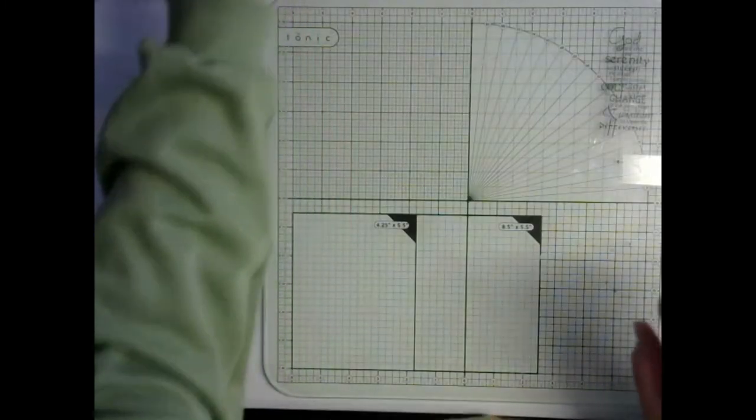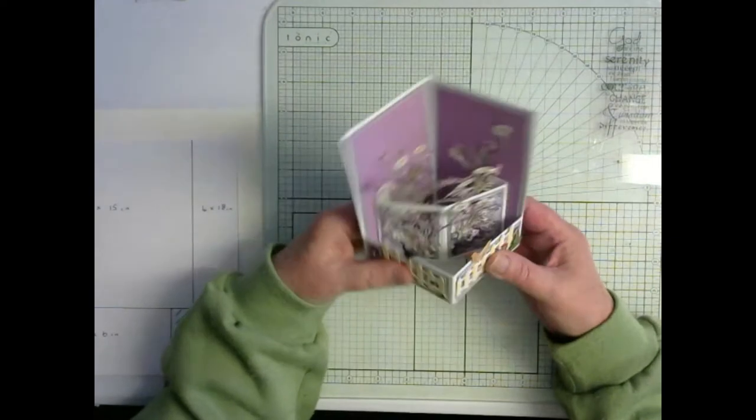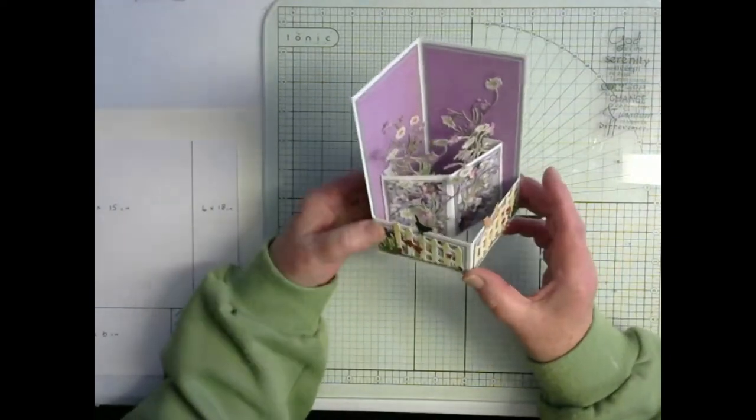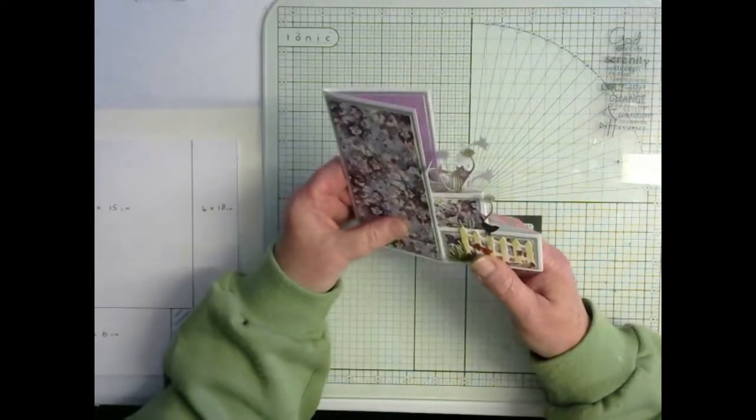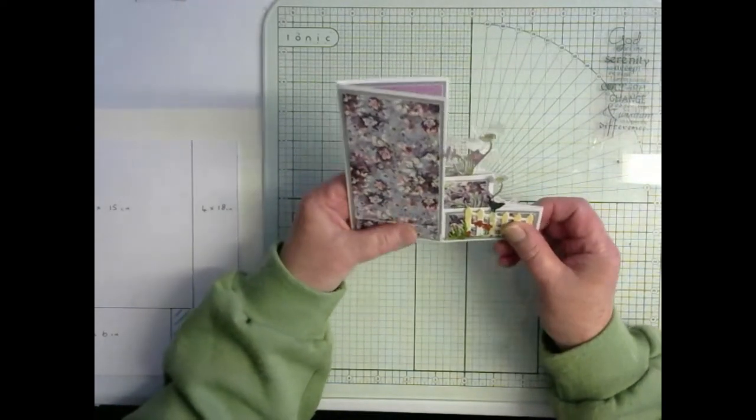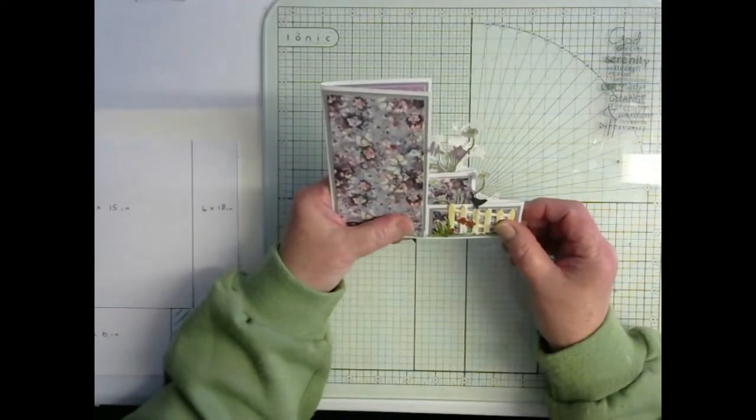Hi everyone, today we're going to look at what they call a balcony card. It has a couple of little steps, folds flat to go into a six by six envelope.